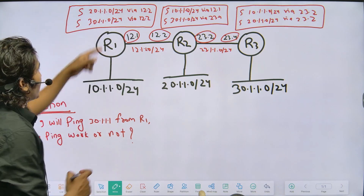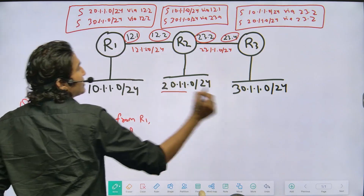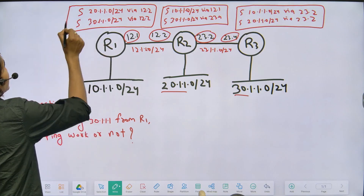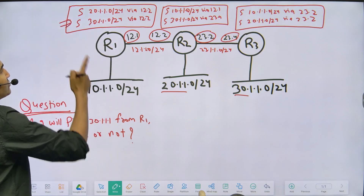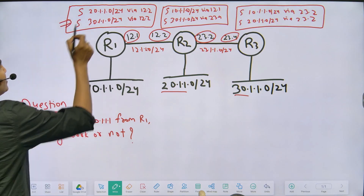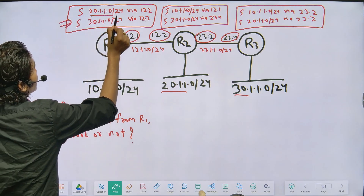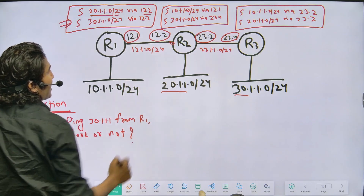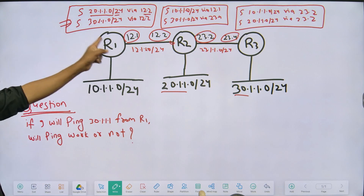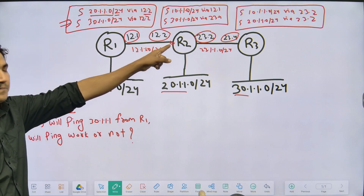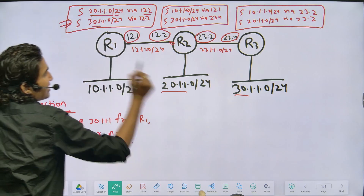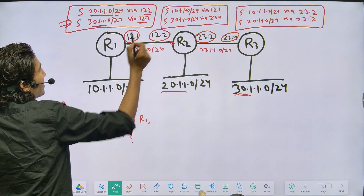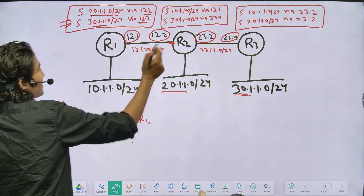In the routing table of Router 1, we have configured two static routes. The first: 20.1.1.0/24 is reachable via 12.2 — that is Router 2's IP address, the gateway for Router 1. The second: 30.1.1.0/24 is also reachable via 12.2. So from this gateway both LANs are reachable.